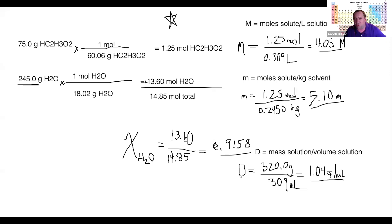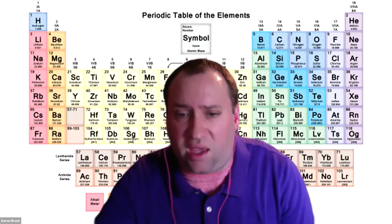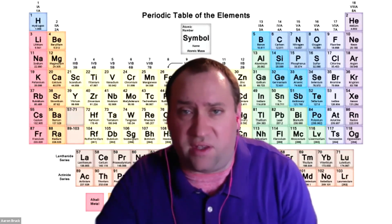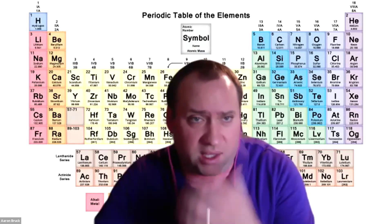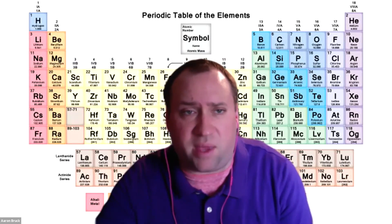We're due for a break — let's come back at 10:20 and start talking about colligative properties: the differences between solutions and pure solvents in terms of some measurable properties.